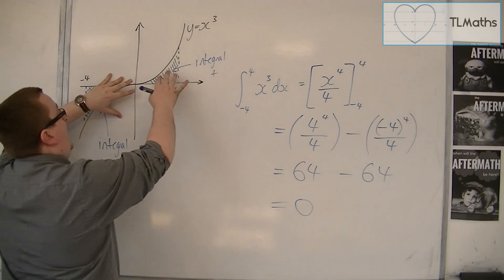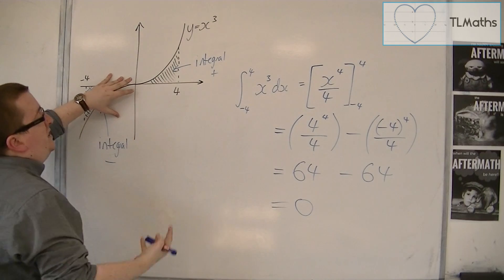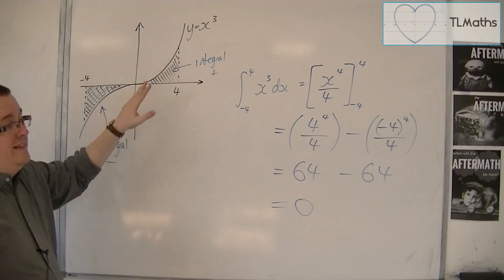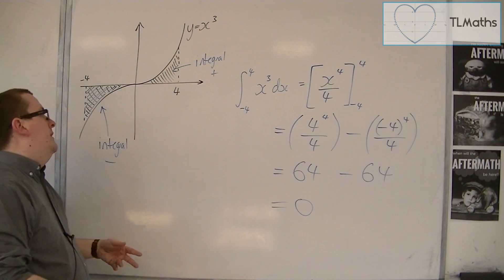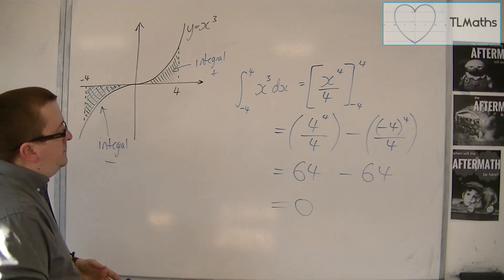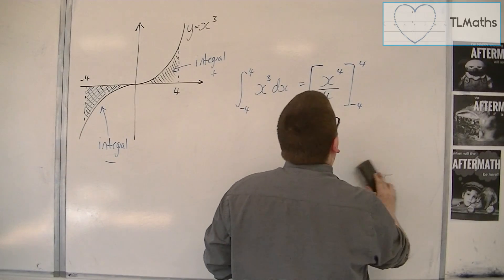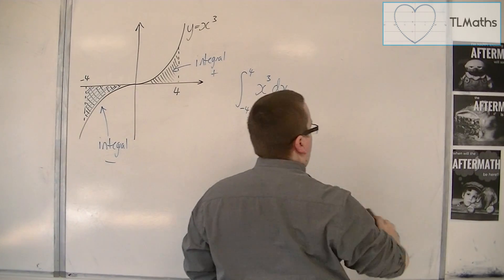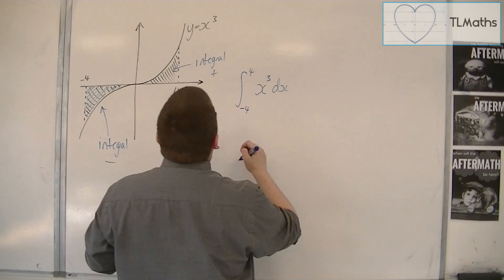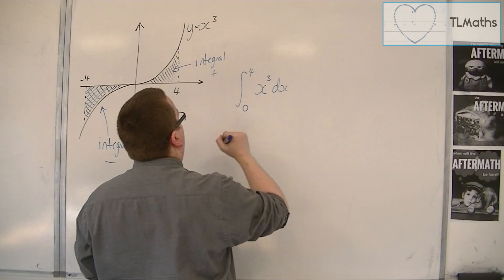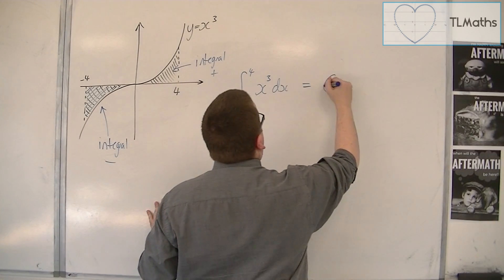So we know that that area is 64 and so we could double it and so the whole area there is 128. If it wasn't symmetric, what you would have to do is find the integral between 0 and 4, which we know is 64.